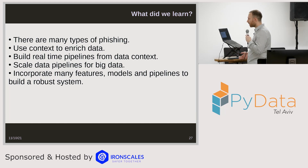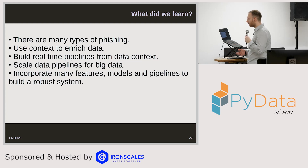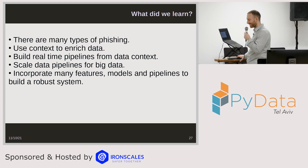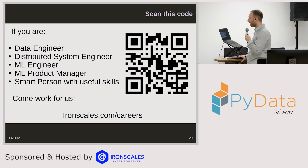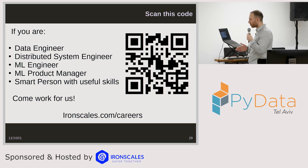To summarize what we discussed: there are many types of phishing, we use contextual data to enrich our feature set, and we can build real-time pipelines from that context, scale them, and stack multiple models and pipelines to build a robust system. And of course, we are hiring — data engineers, backend or ML engineers, ML product managers, or just smart people with useful skills. We'd love to have you and build awesome software together.